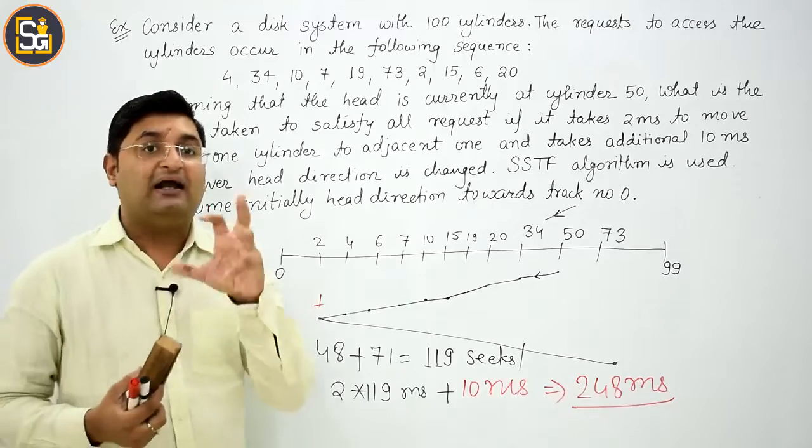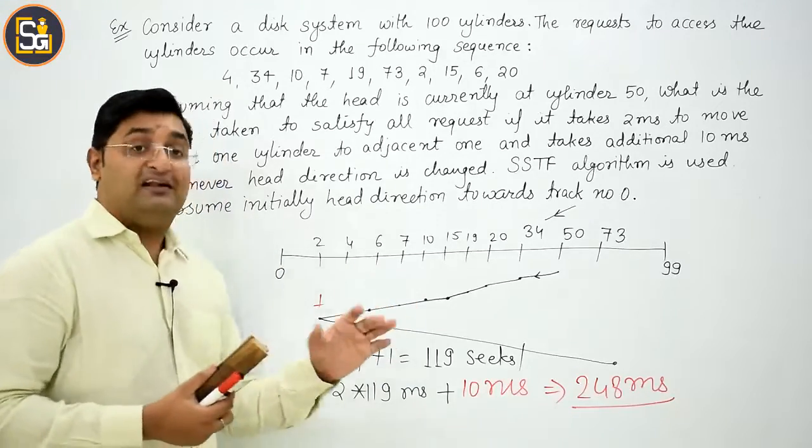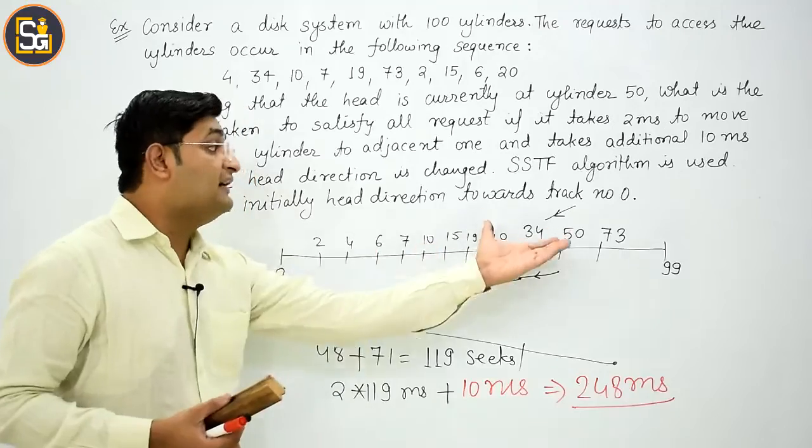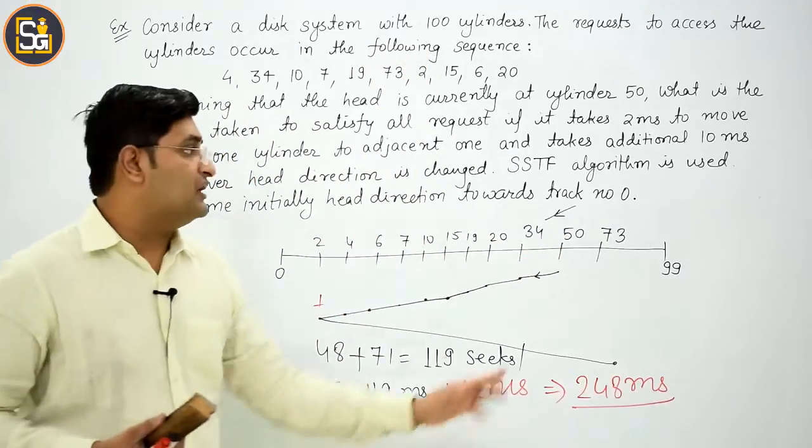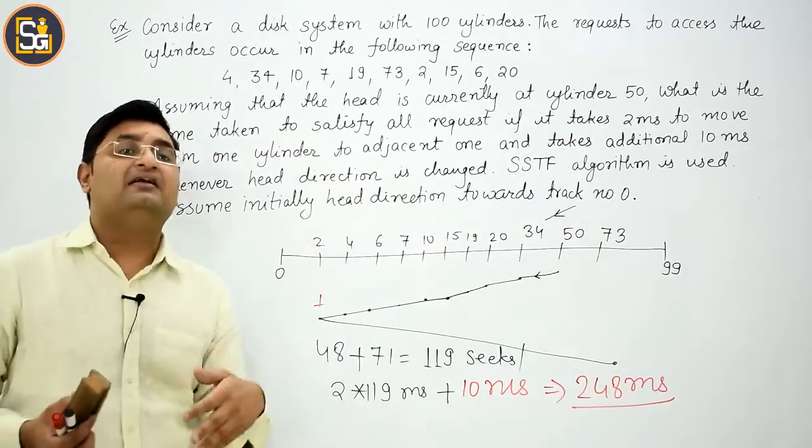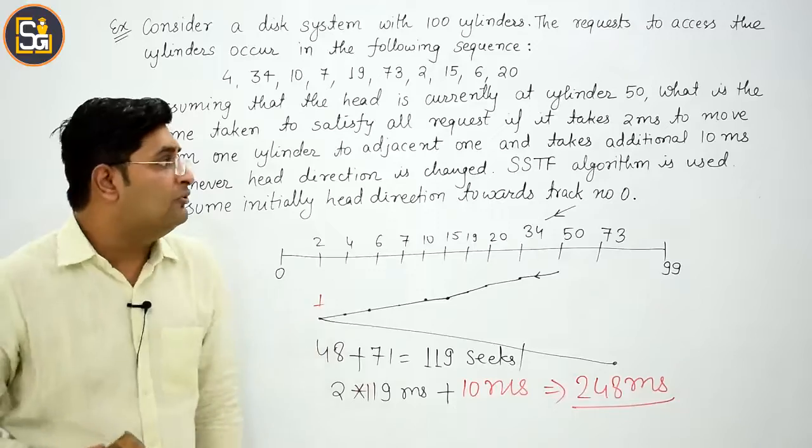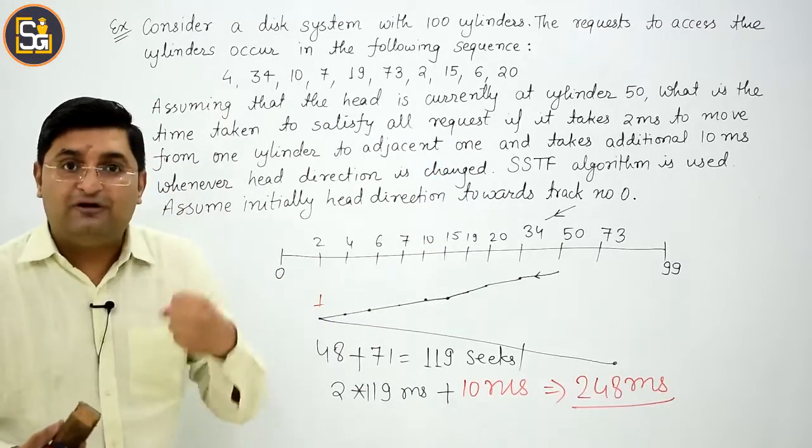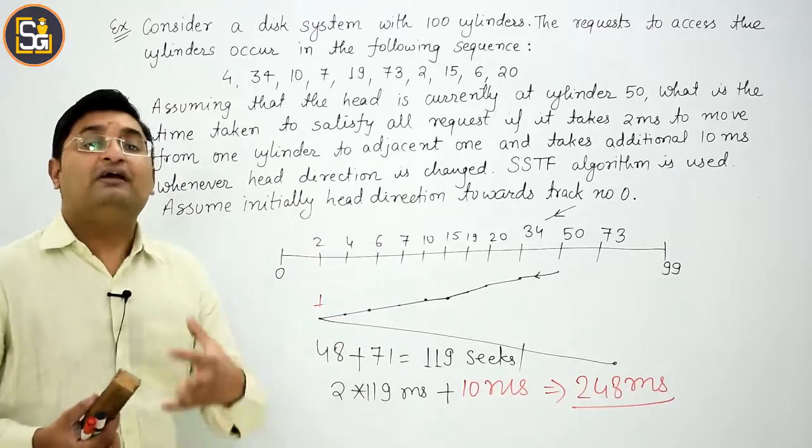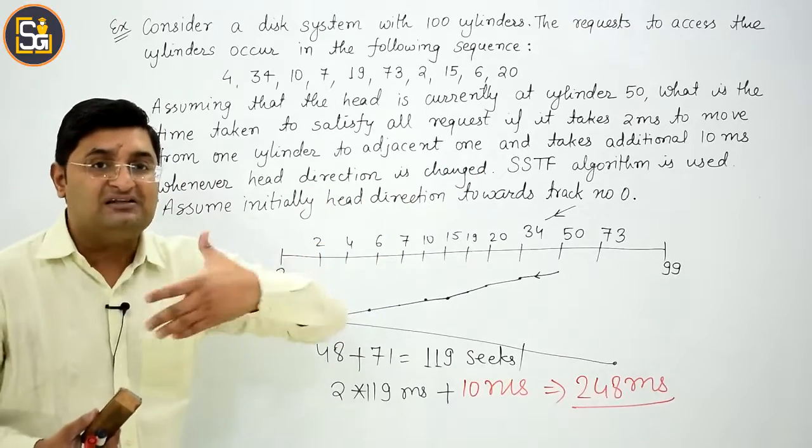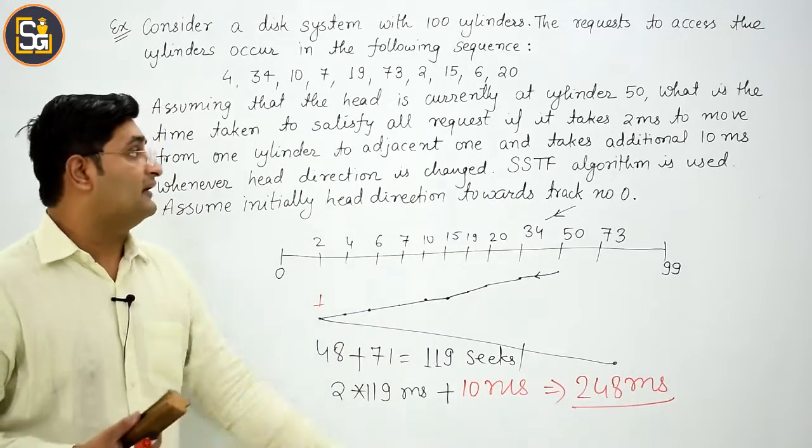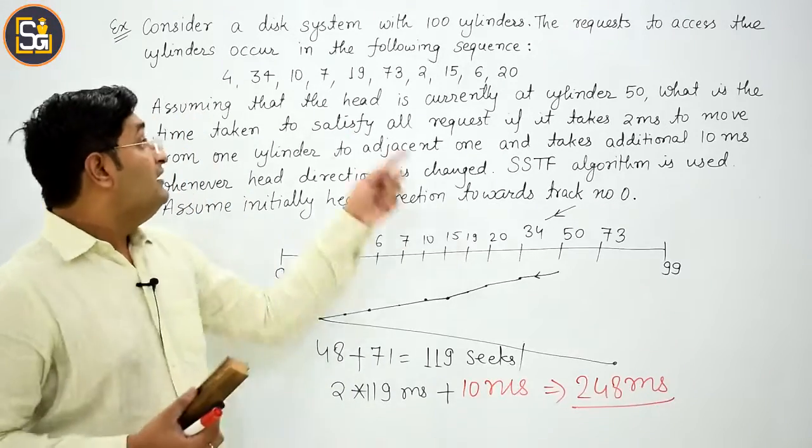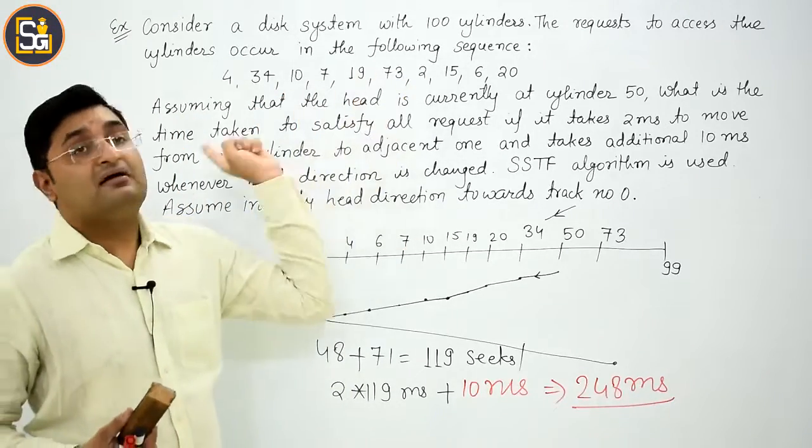This is the total time taken. Clear. This type of equation can also be created. Please don't assume that you'll always get this exact format. It could be asked differently. Instead of 2 milliseconds, there could be some other time, or the head movement time might not be given at all, meaning it's zero.